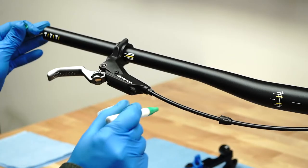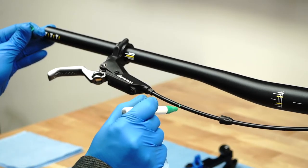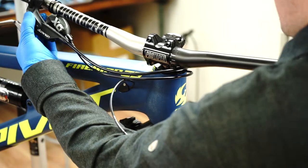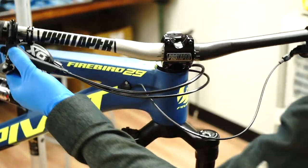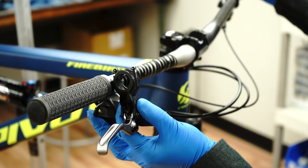Carefully determine and mark the location on the hose where you will make your cut. You need to account for full handlebar and suspension movement when determining hose length.